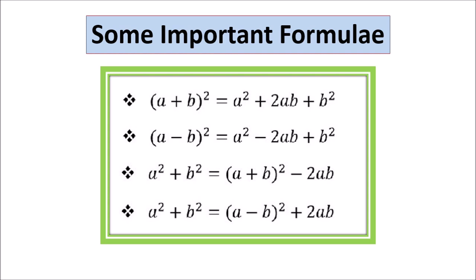You can see on the screen: (a + b)² = a² + 2ab + b². And (a - b)² = a² - 2ab + b². The corollary: a² + b² = (a + b)² - 2ab. And also: a² + b² = (a - b)² + 2ab.